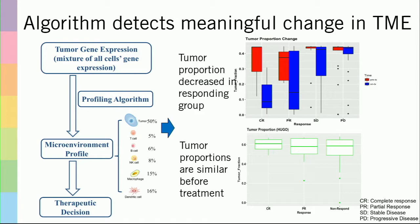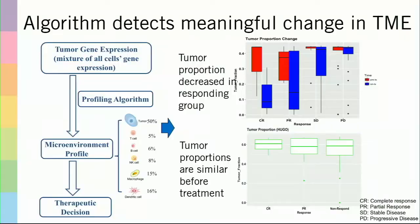If you look at the upper panel, those are different cohorts but still tumor patients. The red ones are pre-treatment and blue ones are on-treatment. You also have complete response group to stable disease and progressive disease group. As you can see, there's a clear shrinkage of tumor fractions in the complete response group. That suggests that for those who respond to therapy, their tumor fraction actually shrinks according to our estimation. You don't have tumor anymore, so of course its fraction goes down. And that justifies that our estimation makes sense.